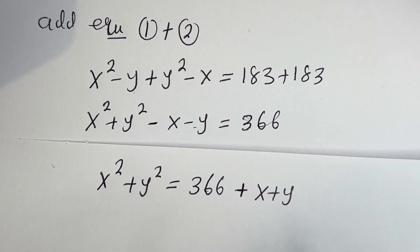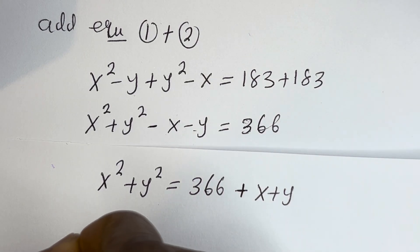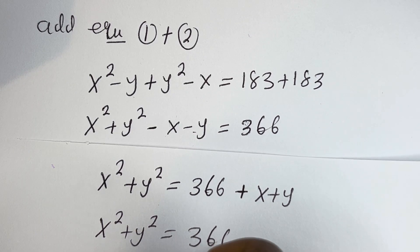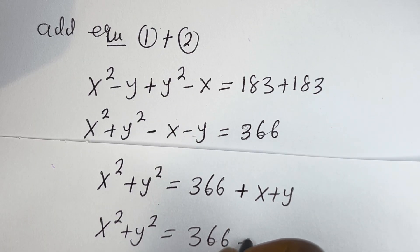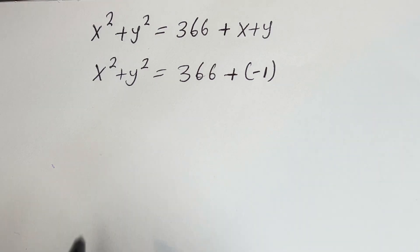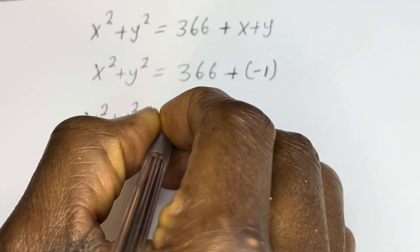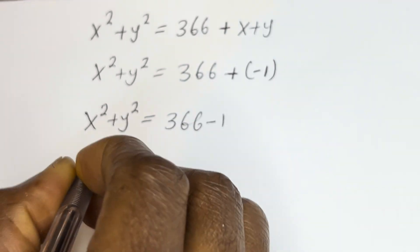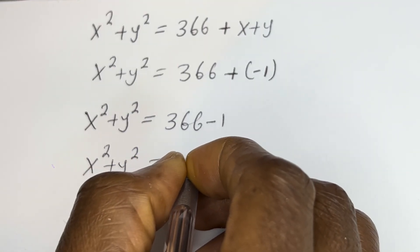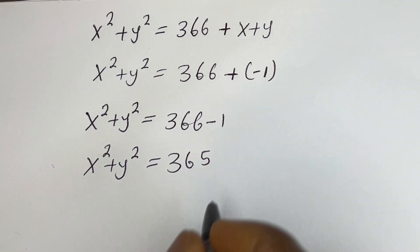Then s squared plus y squared is equal to 366 plus (s plus y). We know that s plus y is equal to minus 1 from equation 3, so s squared plus y squared is equal to 366 plus (minus 1), which is 365. Let's call this equation 4.